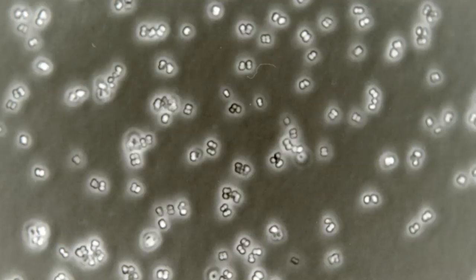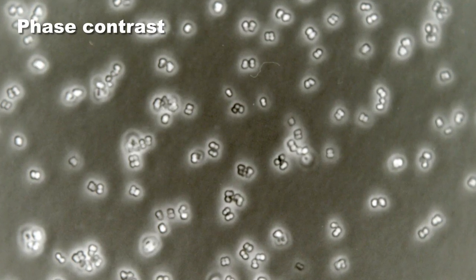And if you have phase contrast optics, then these optics will convert differences in refractive index, because the bacteria, even though they're transparent, they have a different refractive index than the surrounding water. These optics will convert a different refractive index into differences in brightness. So this is a really cool method. And I'm going to just show you now a few pictures that I've taken several years ago, using my university's phase contrast microscope.